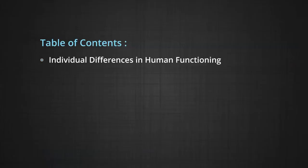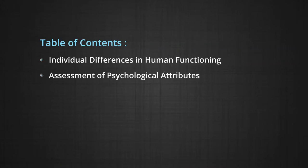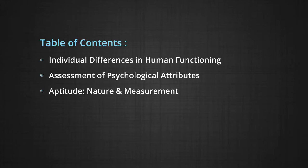In this module, we will cover the following topics: individual differences in human functioning, assessment of psychological attributes, aptitude — its nature and measurement — and creativity. The objectives of this module are: one, to understand psychological attributes on which people differ; two, to learn about different methods used to assess these attributes; and third, to know more about aptitude and creativity.